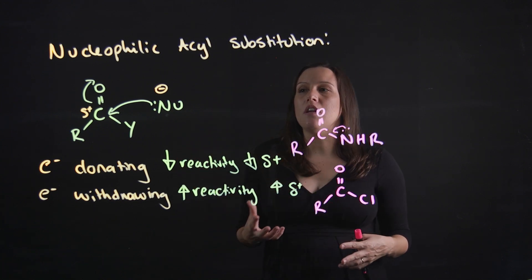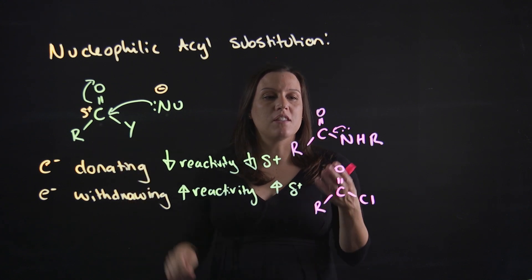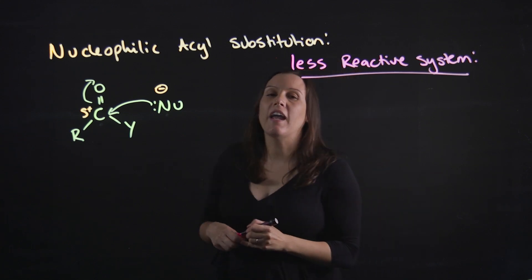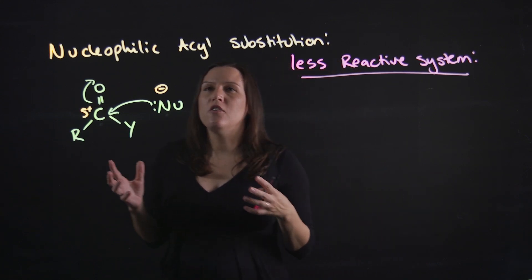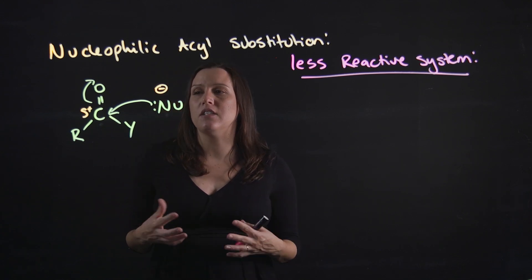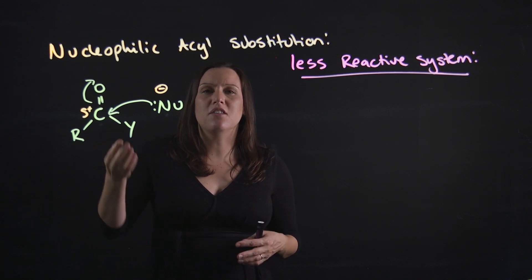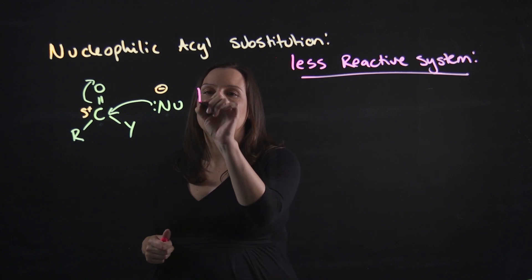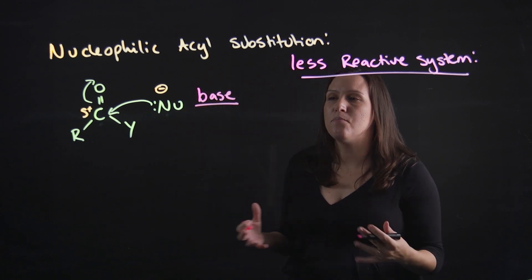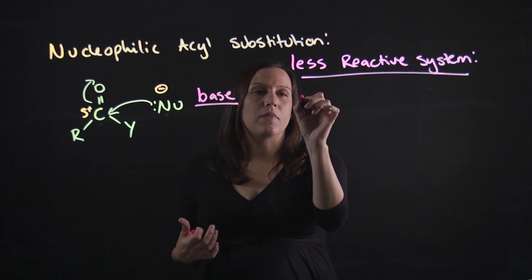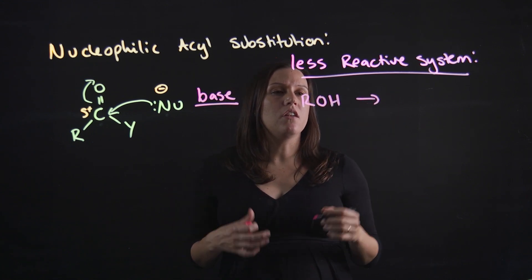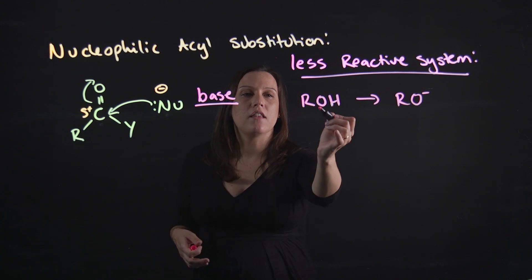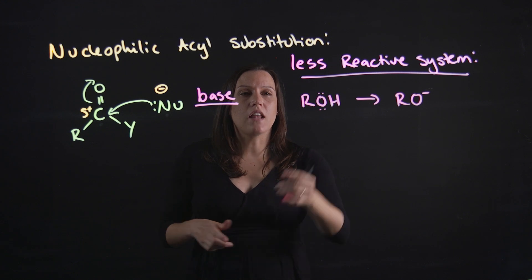What if we have a very unreactive carbonyl carbon, such as an amide? How can we make this reaction work? For less reactive systems where the carbonyl carbon isn't delta positive enough, or the nucleophile isn't negative enough, we can add base to make the nucleophile more negative. For example, if we have an ROH group like an alcohol, adding base gives us RO minus, which has a lone pair of electrons that acts much better as a nucleophile.